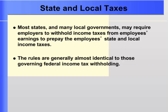Employers are required to withhold income taxes from the employee's earnings. Federal income tax is an additional withholding which comes out of an employee's gross wages. Employees subject to federal income tax withholding may also be subject to state and local income tax withholding in most states. There are a few states which don't require employees to pay state income taxes — Alaska, Washington, and Texas are examples.